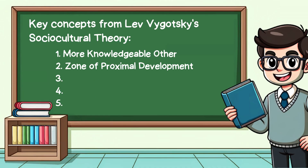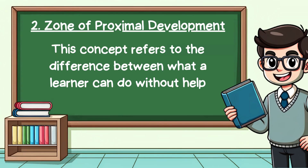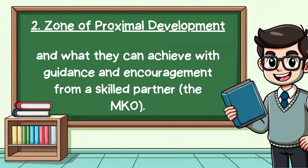The next concept is the zone of proximal development. This concept refers to the difference between what the learner can do without help and what they can achieve with guidance and encouragement from a skilled partner — the more knowledgeable other.